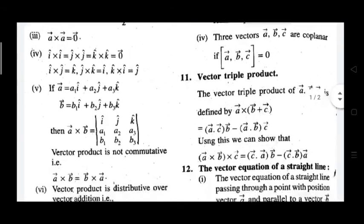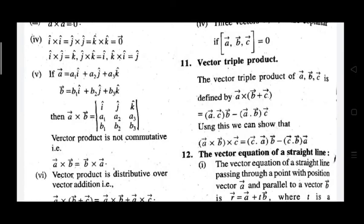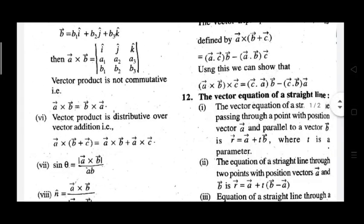The vector triple product of A, B, and C is defined as A cross (B cross C). When expanded, it gives (A dot C)B minus (A dot B)C. Similarly, A cross (B cross C) can also be written as (C dot A)B minus (C dot B)A.